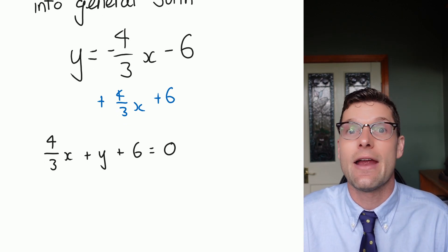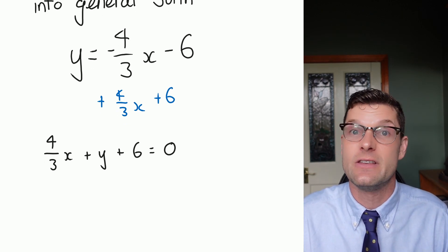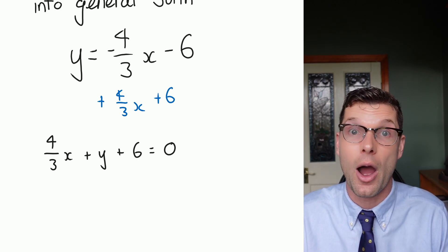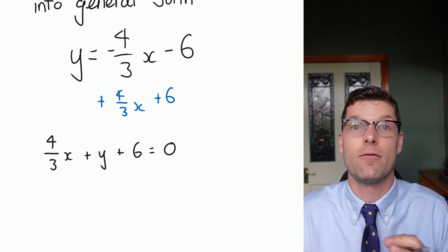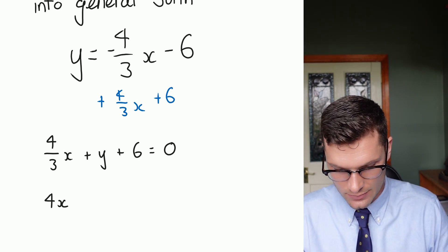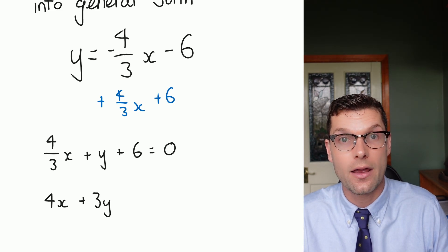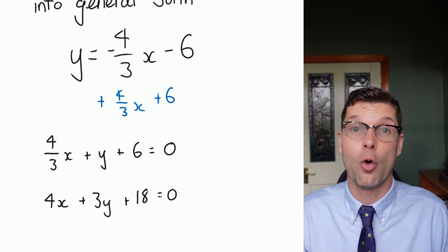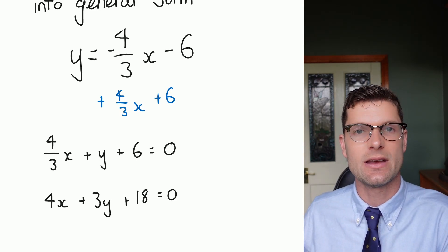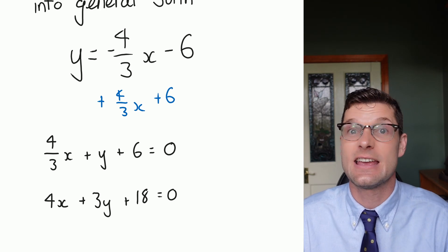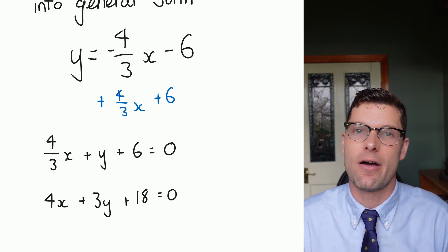The second step is I have to make sure that everything's a whole number. So I've got to get rid of this 4/3. So if I multiply every single term by 3, I'm going to have 4x at the start. So that becomes 4x + 3y + 18 = 0. Now I've got all whole numbers with a 0 on one side and the a term or the number with x is positive. So this is actually my final answer.